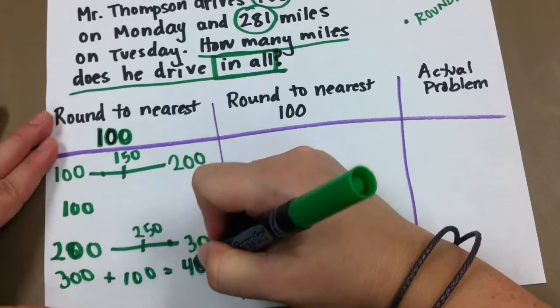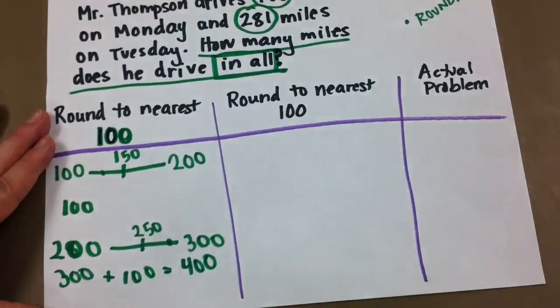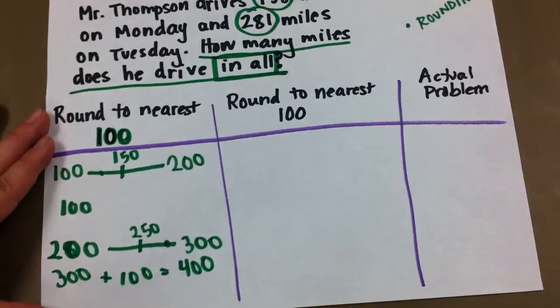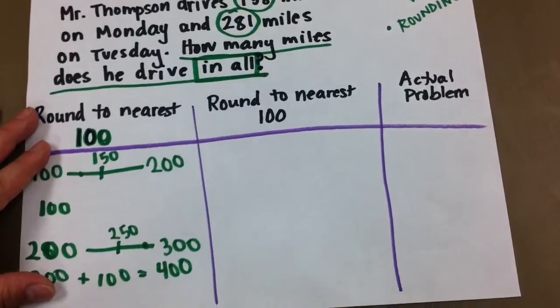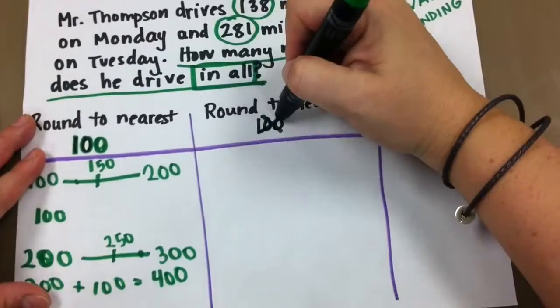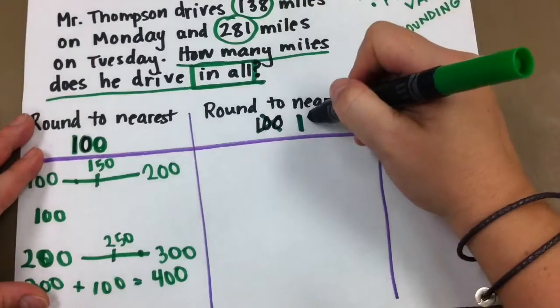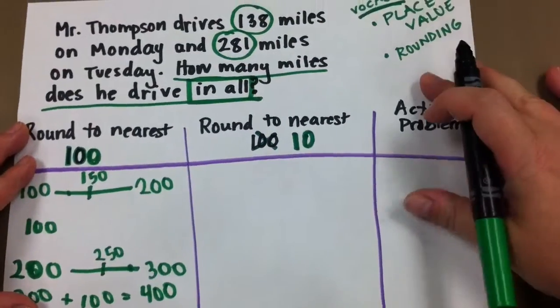All right. The next video will show you rounding to the nearest 10. Okay, rounding to the nearest 10. Crossing this out, and we're rounding to the nearest 10 here.